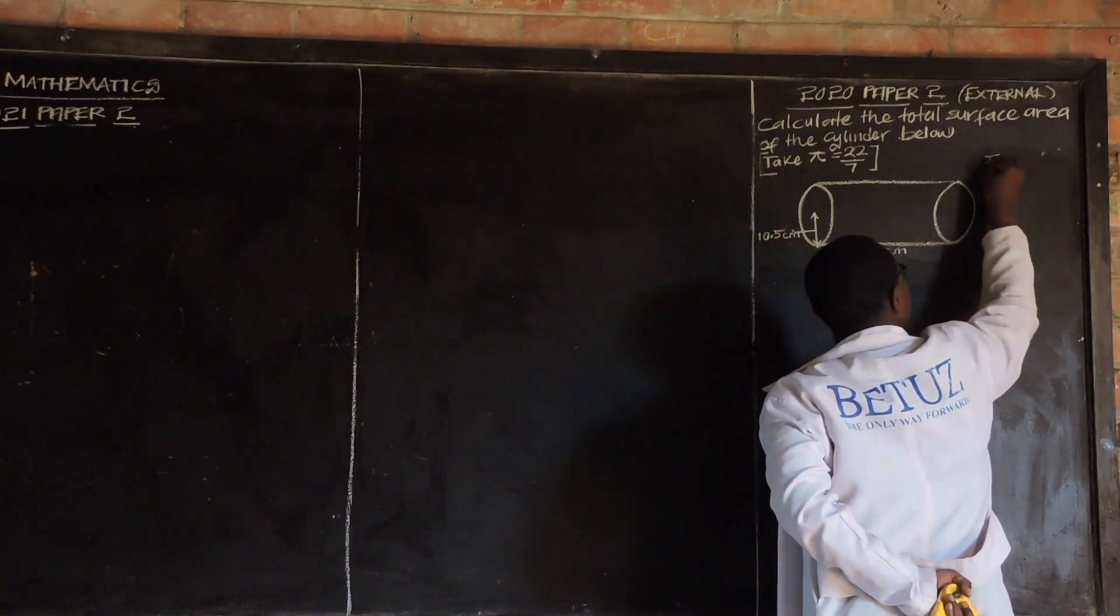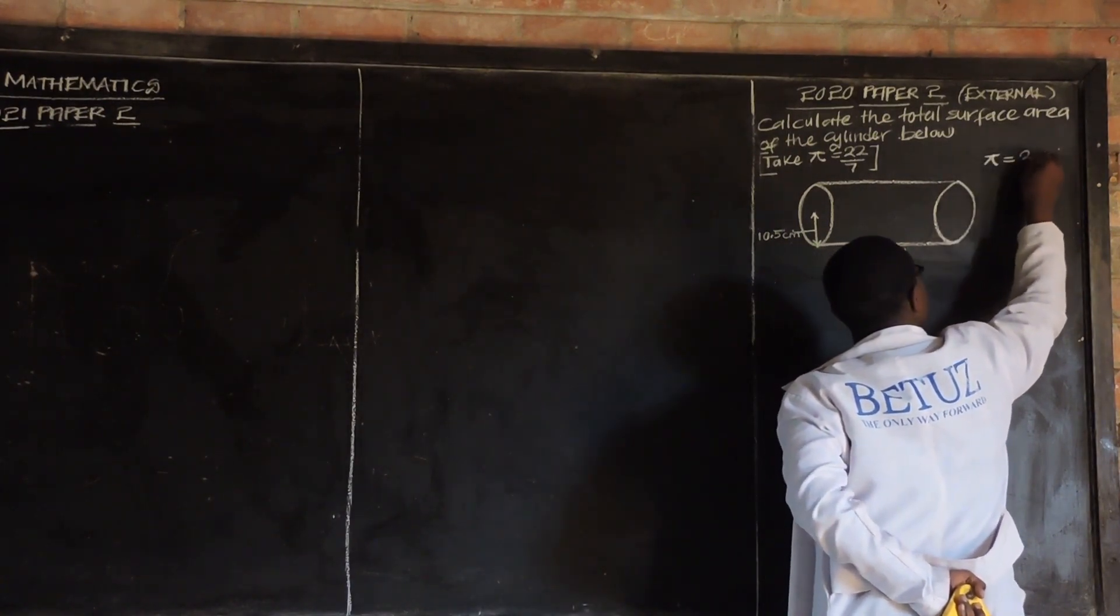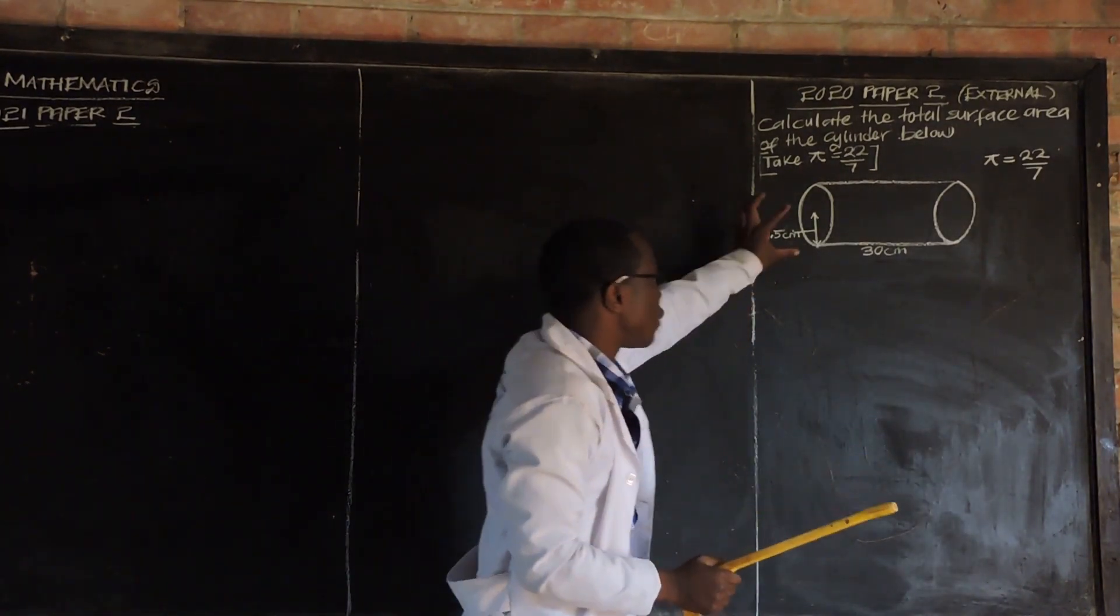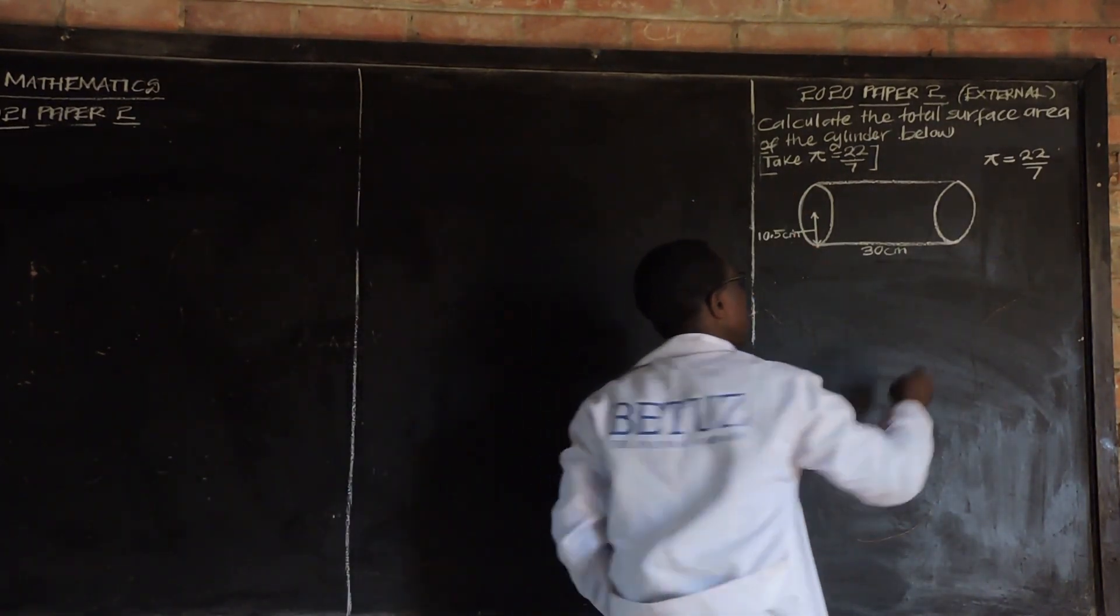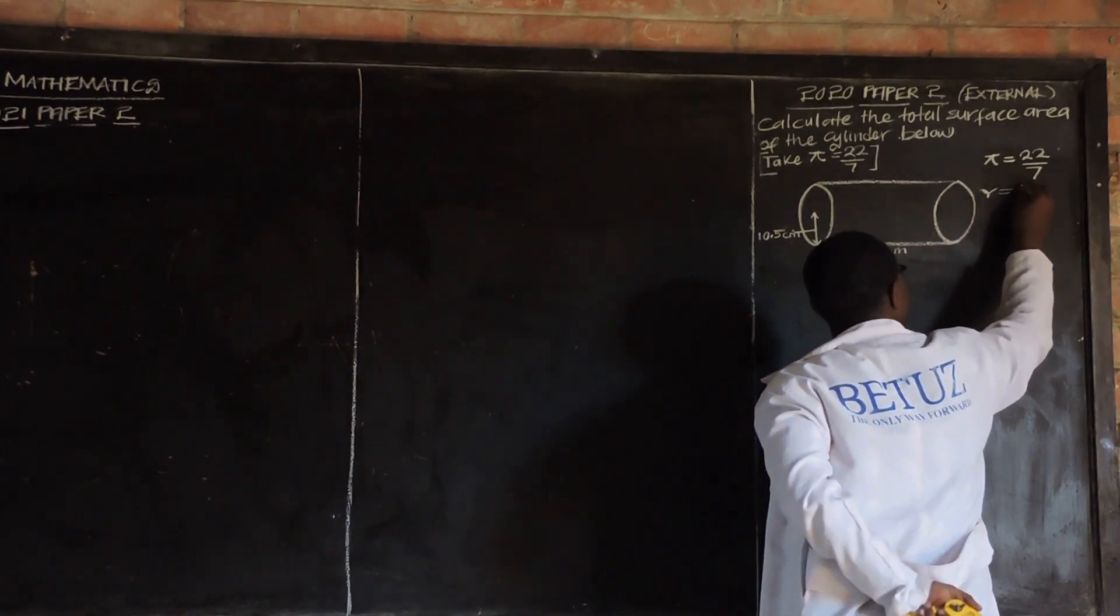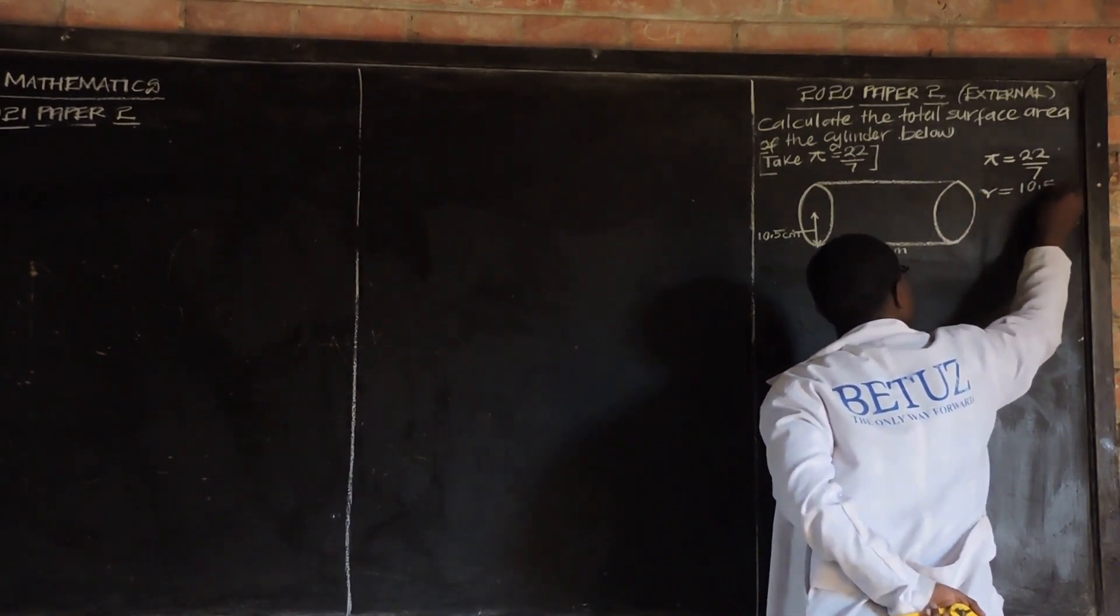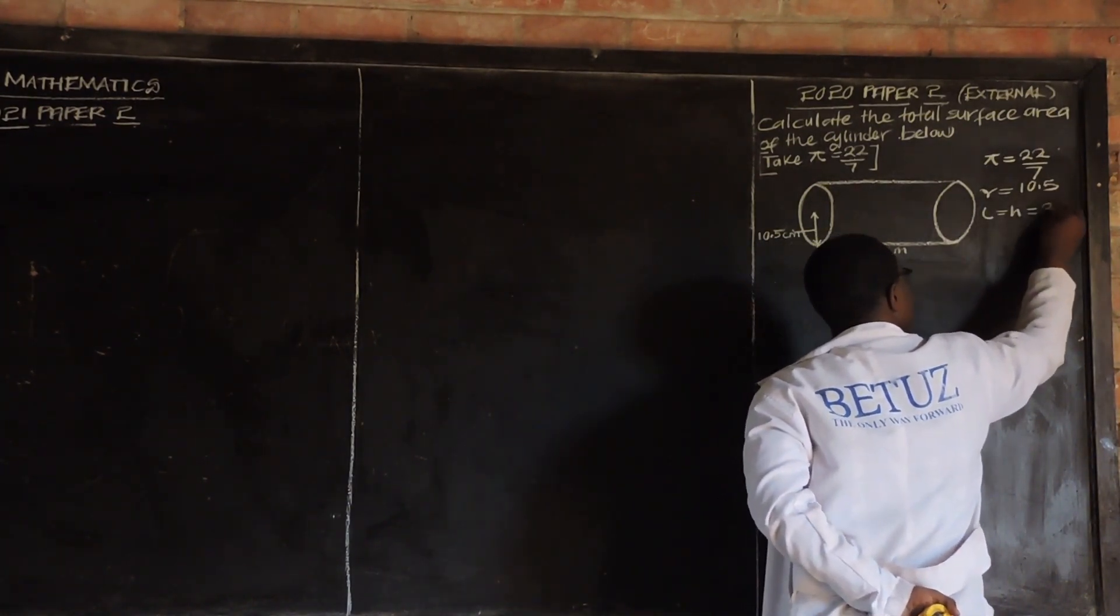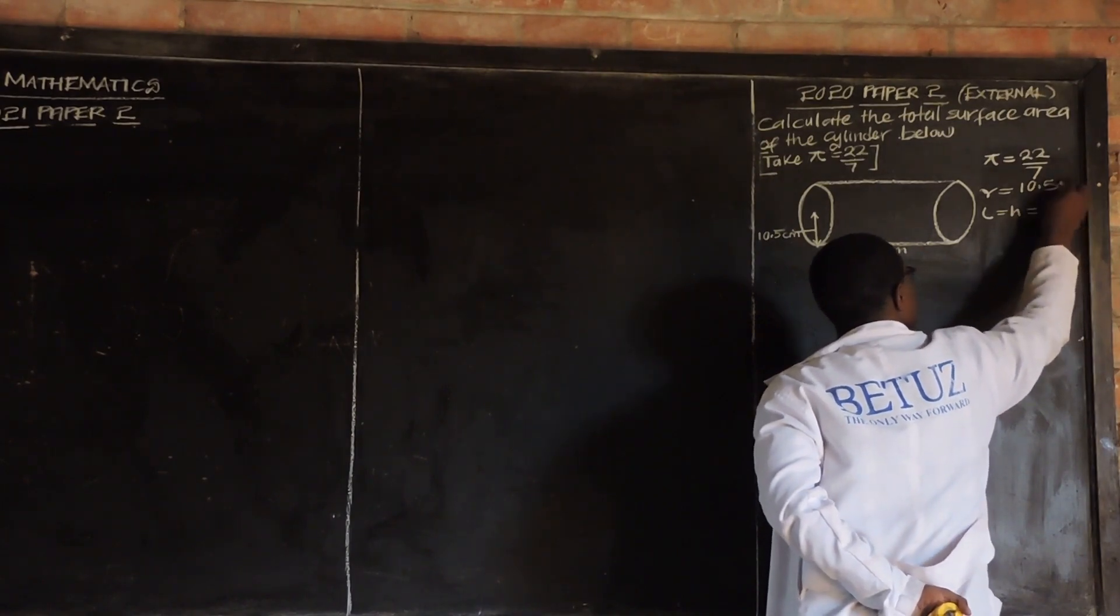We have been given π, which is 22 over 7. We're told to use π as 22 over 7. Then, the base area of this cylinder - the radius is 10.5. And then, the length, which is also the height, is 30 cm.